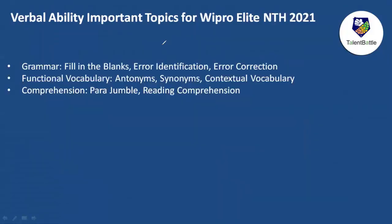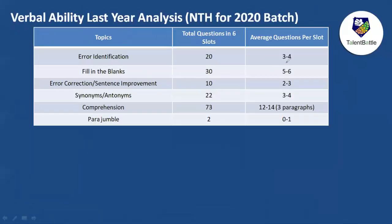In verbal ability, questions are divided into three parts: grammar — filling in blanks, error identification, and error correction — based on articles, prepositions, conjunctions, and subject-verb agreement. Functional vocabulary consists of antonyms, synonyms, and contextual vocabulary. Comprehension includes reading comprehension, inferential comprehension, and para jumbles.